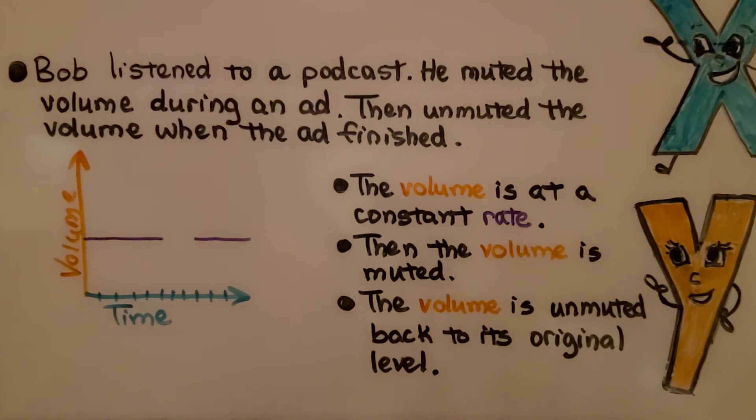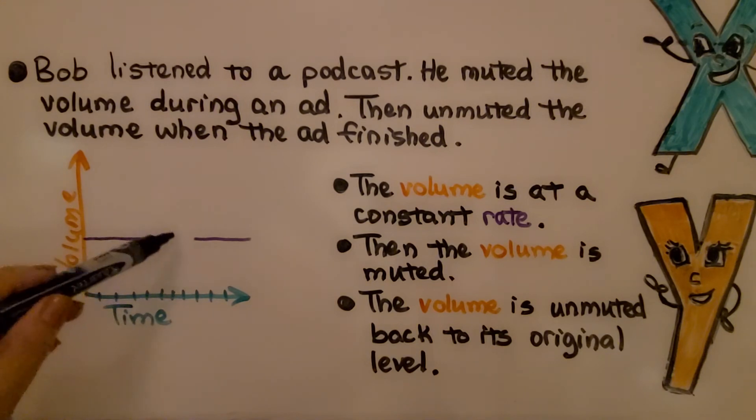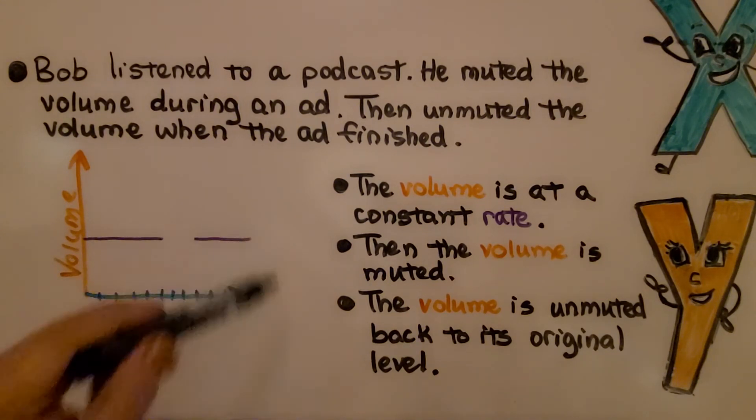Bob listened to a podcast. He muted the volume during an ad, then unmuted the volume when the ad was finished. Here we have volume and time. The volume is at a constant rate, then it's muted so we have nothing here, then the volume is unmuted back to its original level.